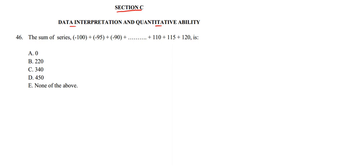Let us begin with question number 46. Question 46 is the sum of the series: minus 100, minus 95, minus 90, and so on, up to 110, 115, plus 120. We have been given a series from minus 100 till 120 with a common difference of 5 for each term, and we need to find the sum of this series.